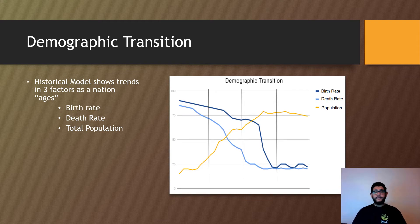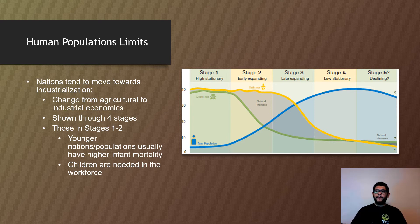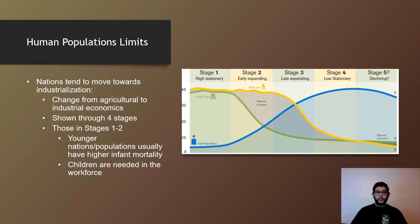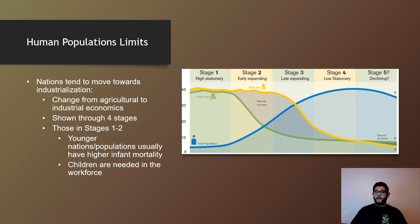Let's take a look at another example. A population tends to move from agriculture to industrialization. In stage one, you're going to see a very high birth and death rate that are very close to each other, and as that happens, the population number is pretty low.